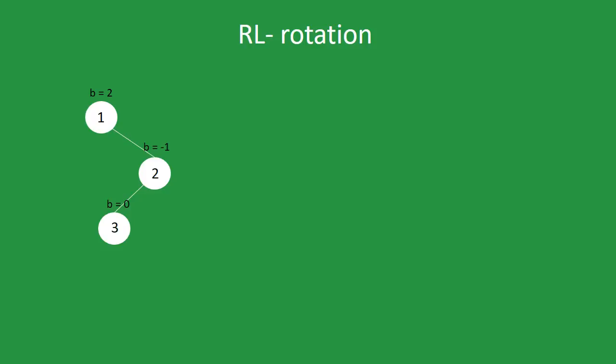As you can see in this example, the top node has a balance of 2 and the node under has a balance of minus 1. So we apply right rotation on the second and third node. This will result into this, and we will solve this by simple left rotation.